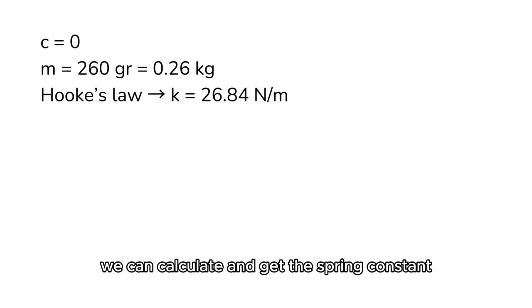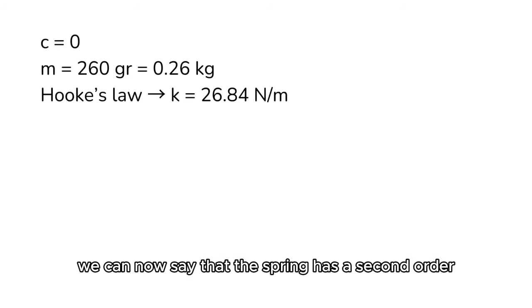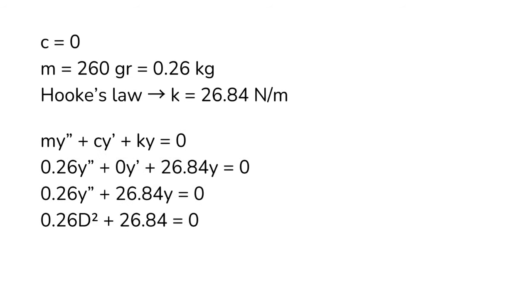And from Hooke's Law, we can calculate and get the spring constant, that is 26.84 N per meter. Alright, so we have m, c, and k. Okay, we can now say that the spring has a second order equation. And that is 0.26y double prime plus 0y prime plus 26.84y equals zero.